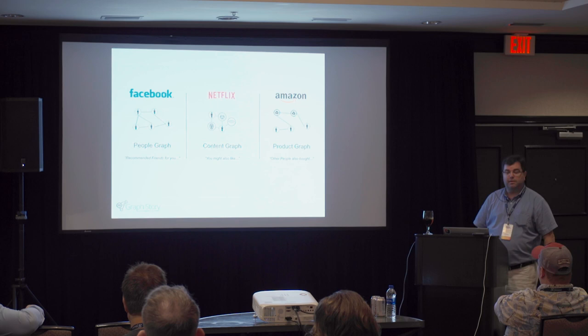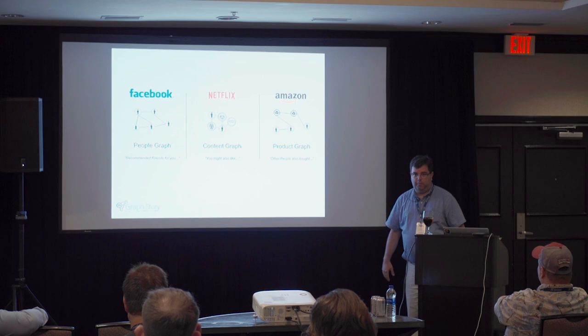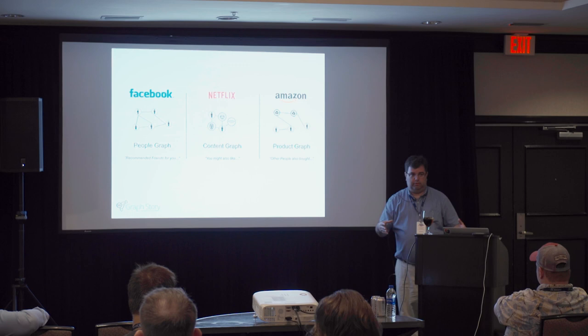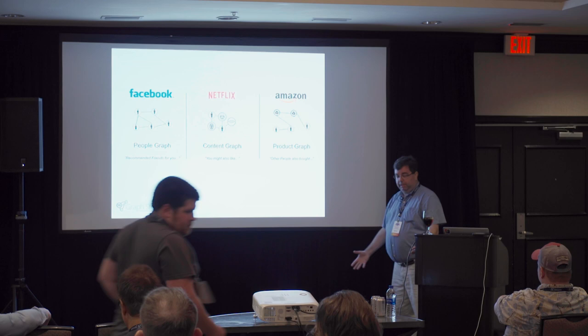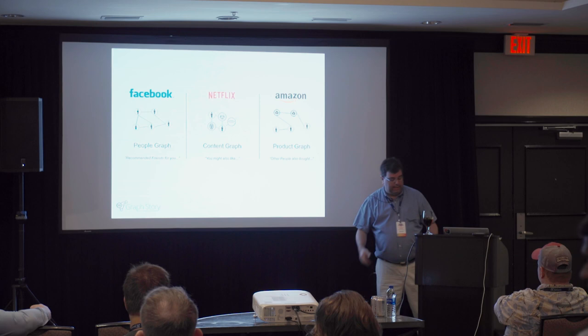So, graphs. These are companies that use them, believe it or don't. Facebook is one of the largest public graphs that we know about. There are government agencies — the British and US governments have a graph; the Brits wrote it, it's called Gaffer, and the data storage engine is written by the NSA, called Accumulo. Facebook is the largest known people graph — it's public for the most part and recommends friends for you. They built their own graph, not an off-the-shelf piece of software. Netflix has a content graph they built, focused on recommendations.